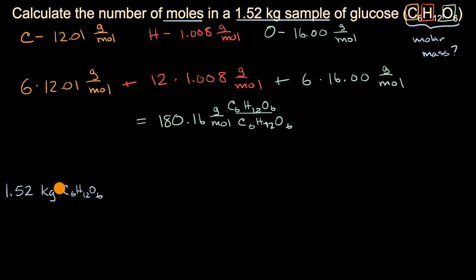Well, first we can convert it to grams, because here our molar mass is given in terms of grams. So we're going to want kilograms in the denominator and grams in the numerator. How many grams are there per kilogram? We have 1,000 grams for every one kilogram.